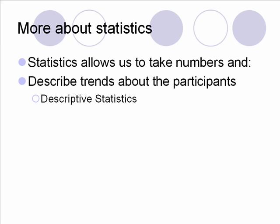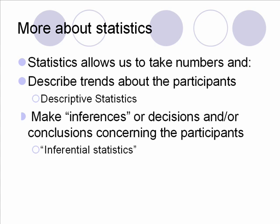You guys have used descriptive statistics. We would use batting average in baseball — that's just one example. We know somebody's batting 400, they are doing really well, and if they're batting 100, they're not doing too well. That's just describing something about an individual. The other type of statistics is called inferential statistics — another thing we can do with numbers is make inferences or decisions and conclusions concerning the participants. Some stats books call this inferential statistics.